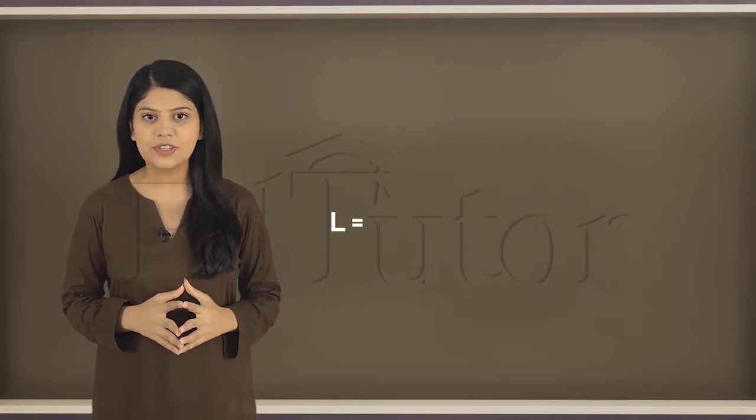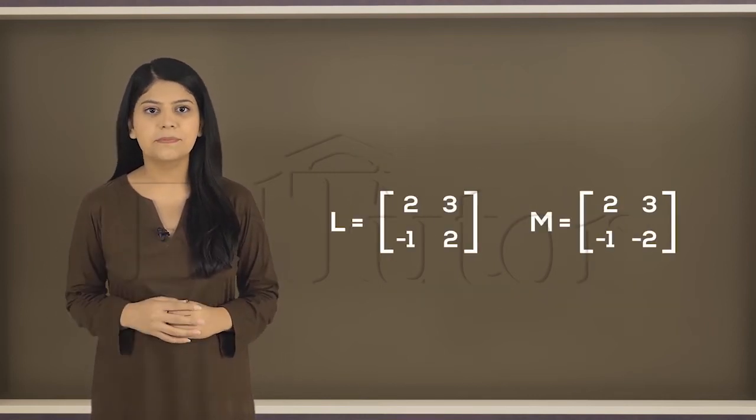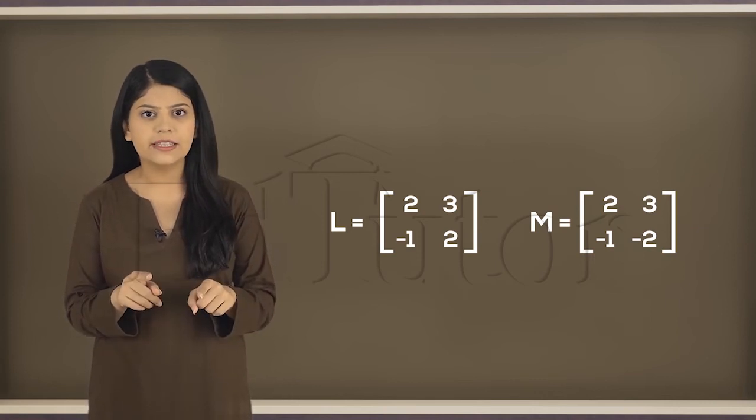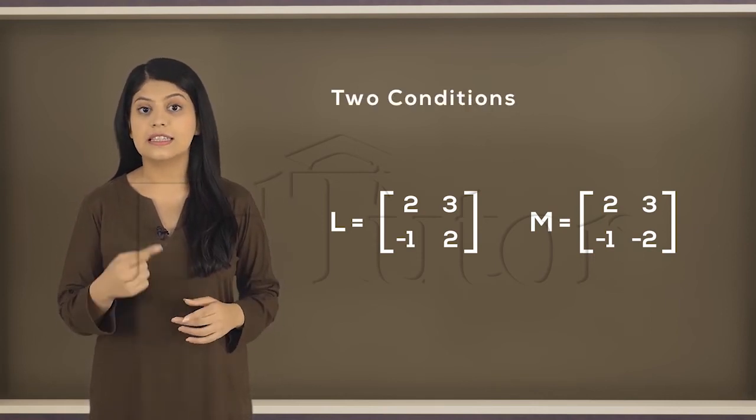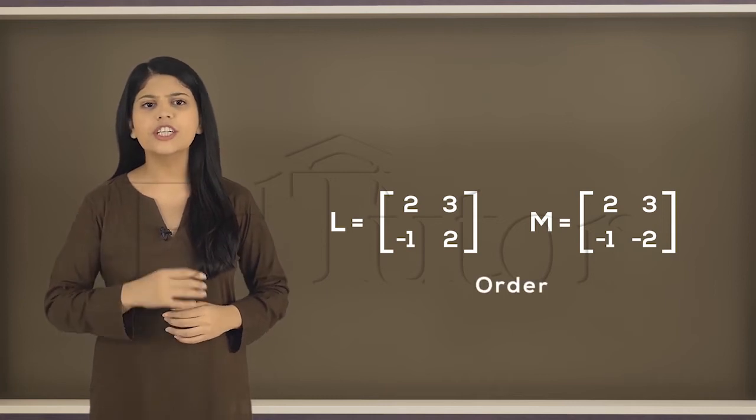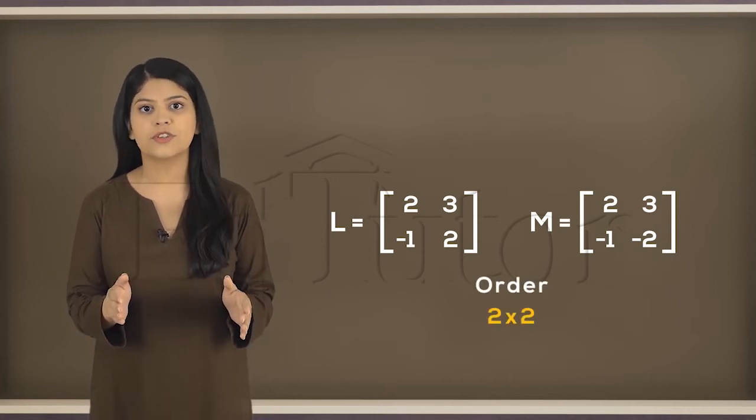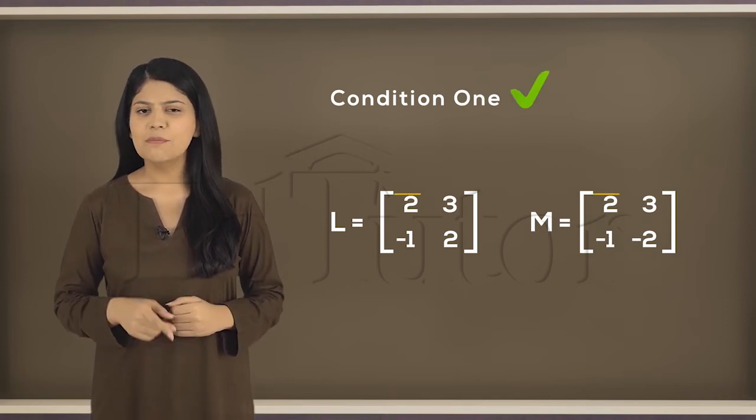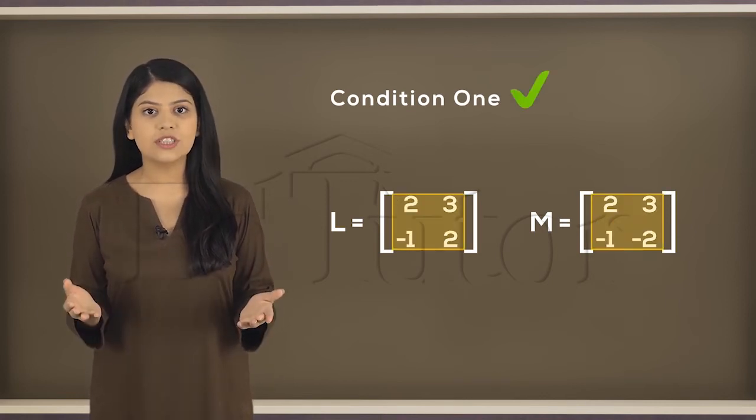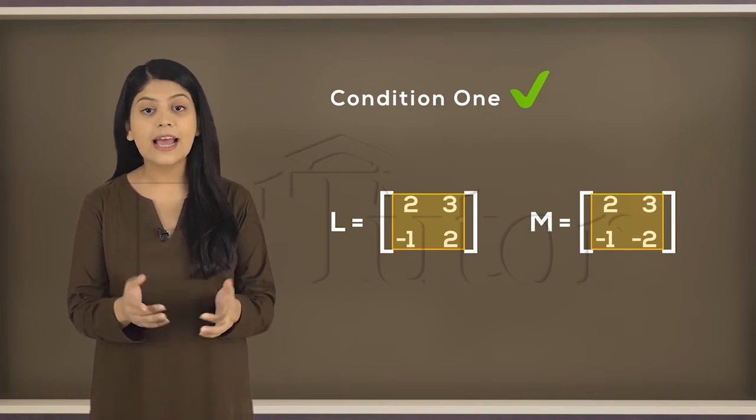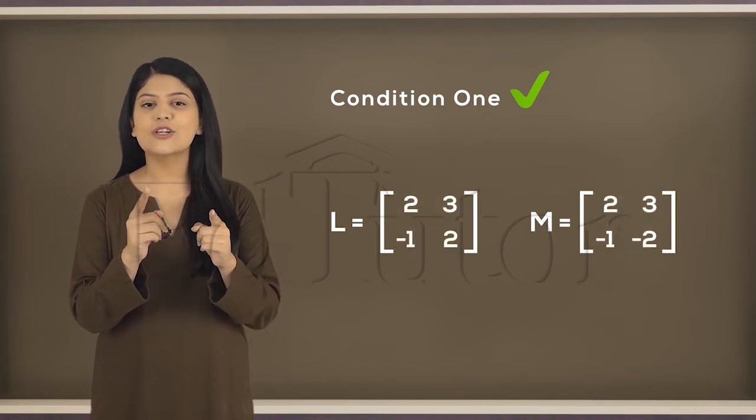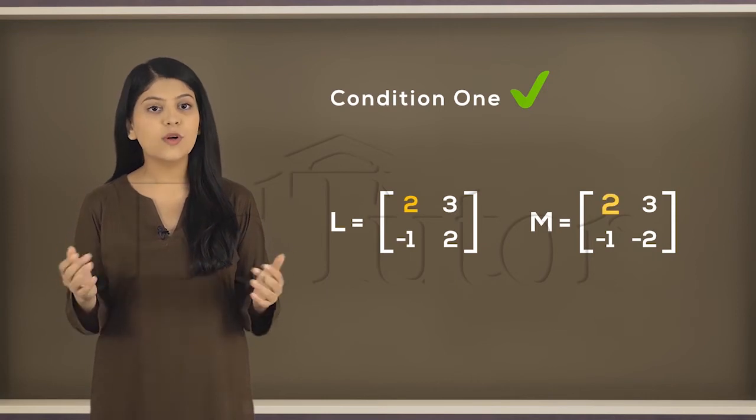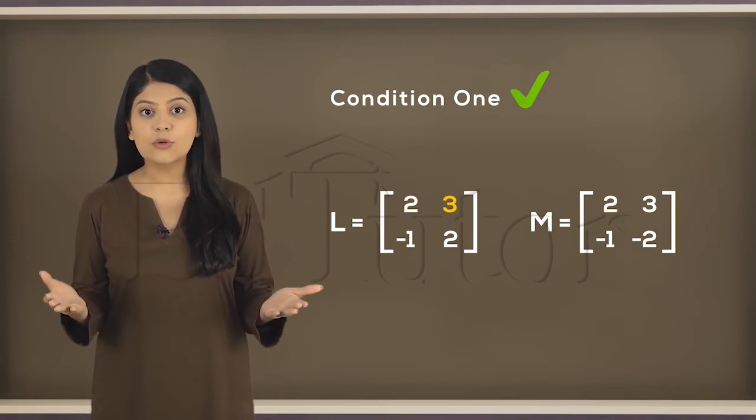Matrices L and M. When we start to compare them, we check for two conditions. In this example, the order is 2 by 2 for each matrix. Condition 1, check. Moving on to the corresponding entries, they look similar at first glance, but let's look at them closely. 2 is equal to 2, 3 is equal to 3, negative 1 is equal to negative 1. So far so good.